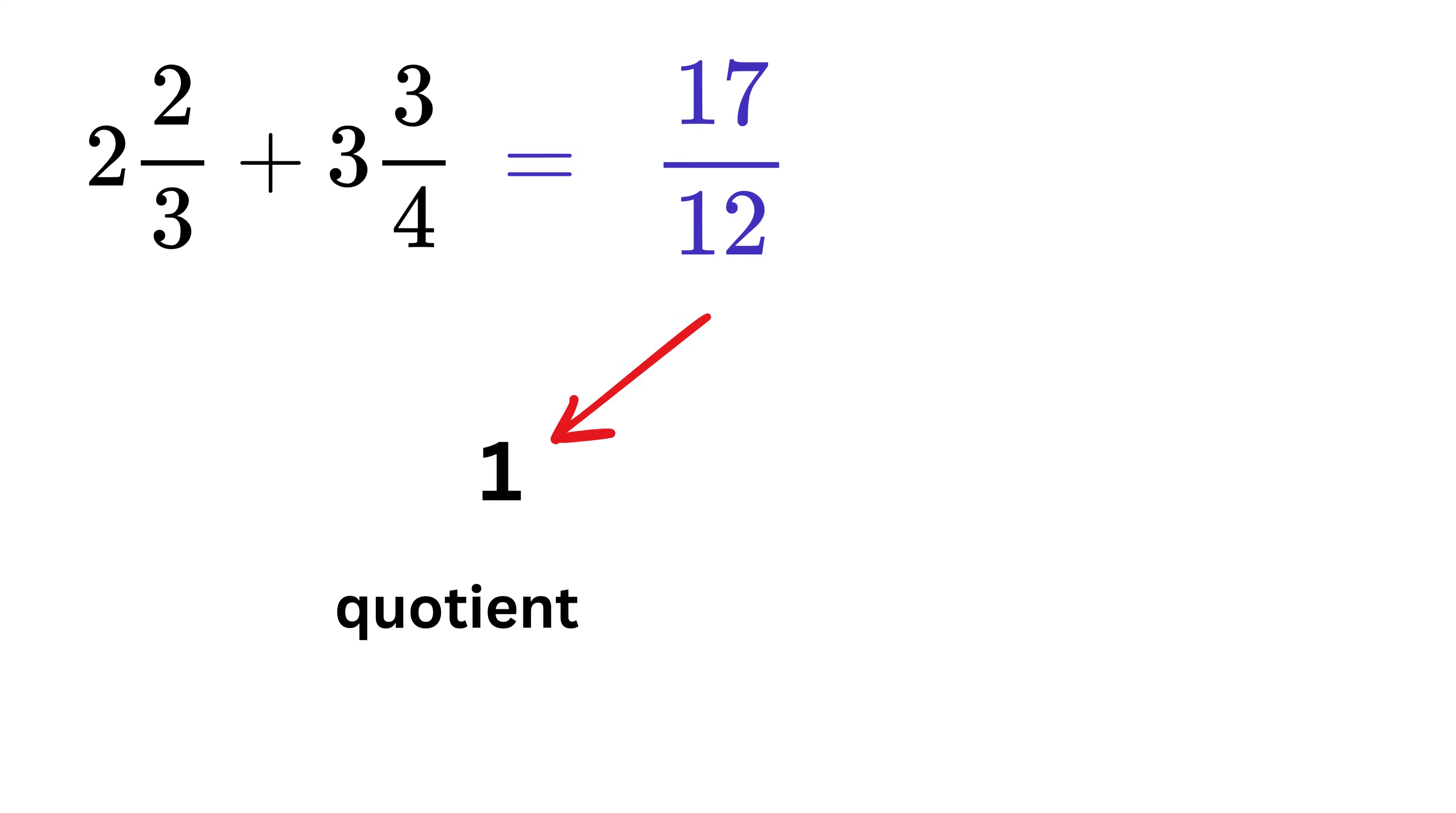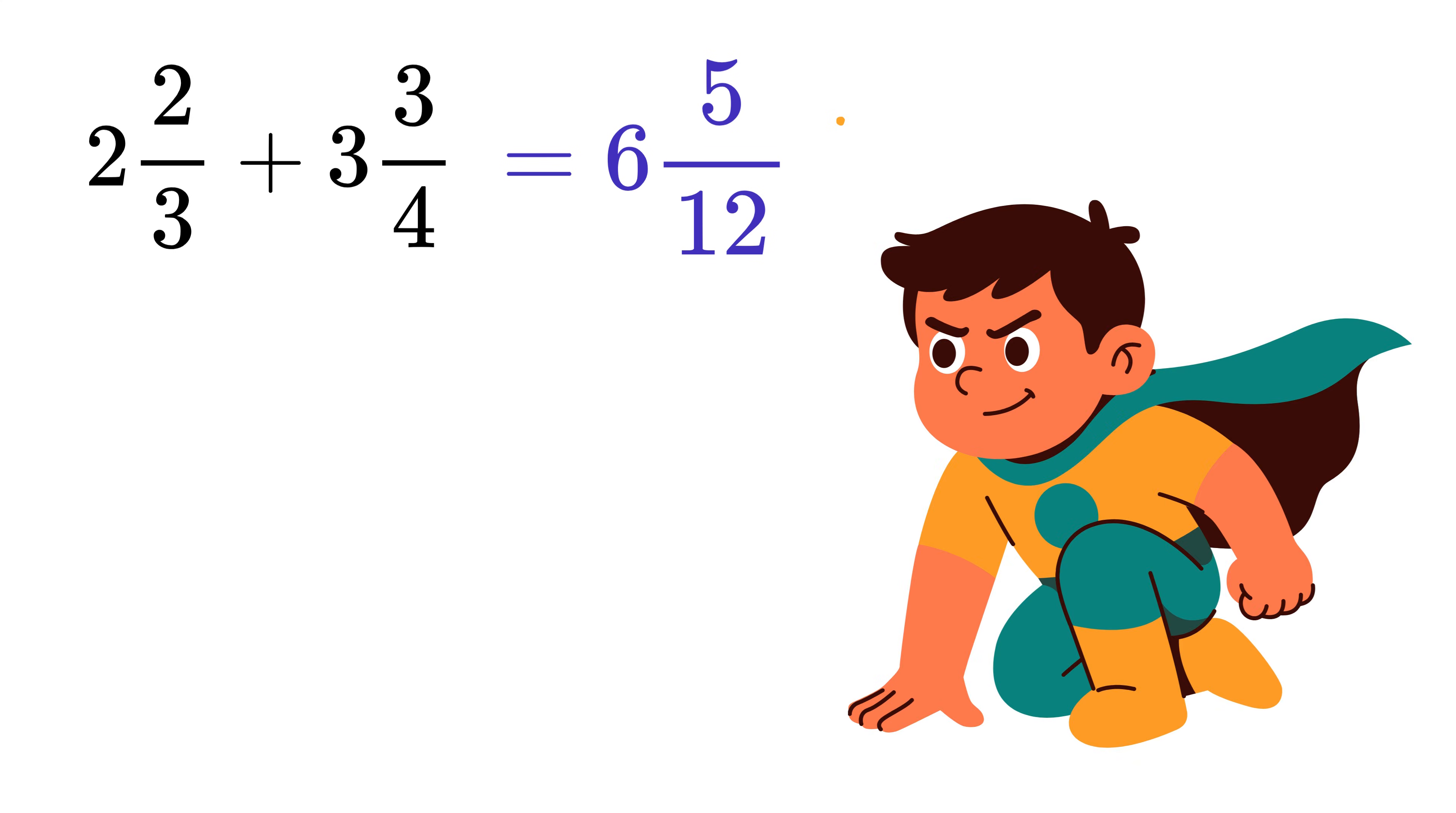Put it here in the numerator. The fraction part becomes 17/12. But hey, if we divide 17 with 12, we get 1 as quotient and 5 as remainder. So write 5 here and put this plus 1 here. Now add these two whole numbers to get 2 plus 3, or 5. After that, add this plus 1 to get 6 and write it here.